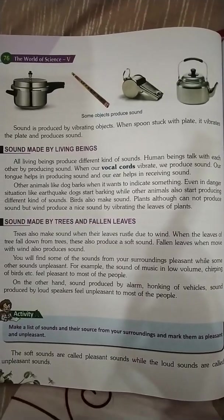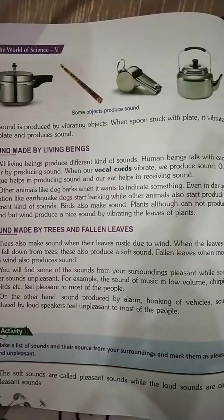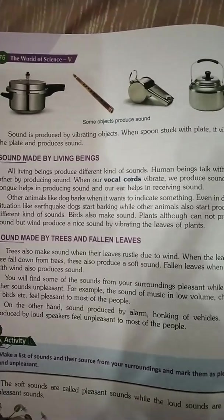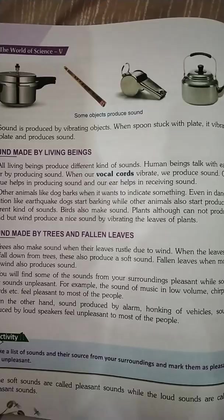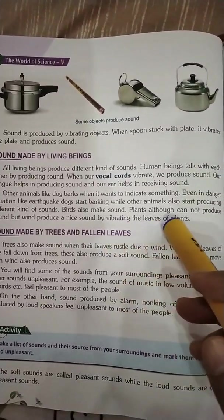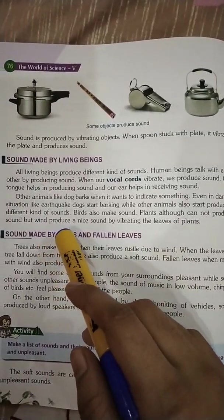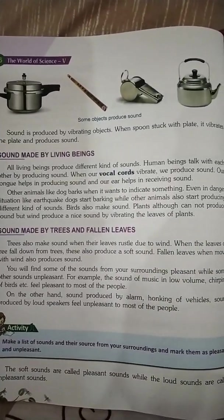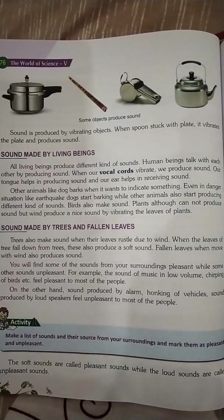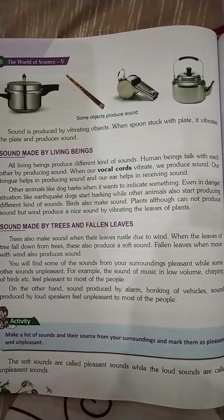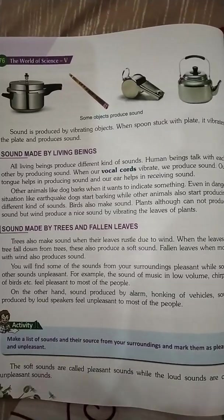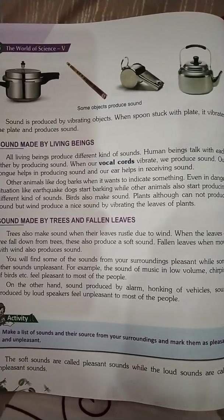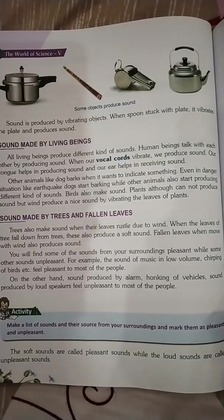جب کتا sound سنتا ہے تو بھونکنا شروع کر دیتا ہے۔ دوسرے animals بھی آوازیں نکالتے ہیں، birds بھی آوازیں نکالتی ہیں۔ Plants بولتے نہیں ہیں — وہ آواز نہیں بنا سکتے — لیکن جب ہوا چلتی ہے تو ان کے پتے ہوا سے move کر کے vibration پیدا کرتے ہیں۔ Plants living things میں آتے ہیں لیکن وہ sound produce نہیں کر سکتے؛ ہوا ان پر touch کر کے sound produce کرتی ہے۔